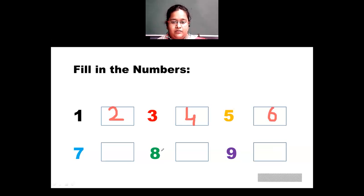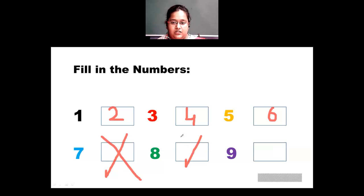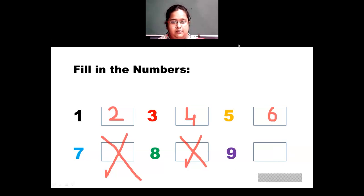Then 7 — and 8 is already given, so there is nothing between 7 and 8. After 8, there comes 9, which is also already given. So the complete sequence is: 1, 2, 3, 4, 5, 6, 7, 8 and 9.